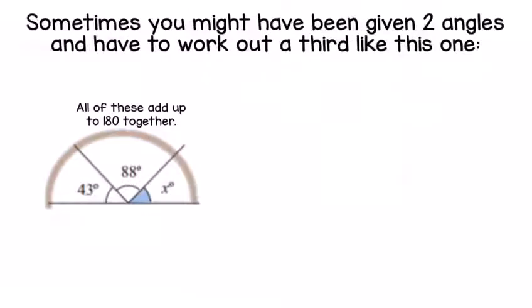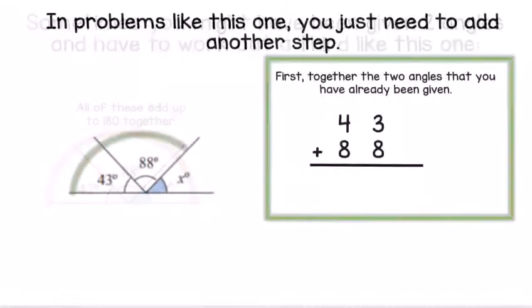Sometimes you may be given two angles already and have to find the third one. For problems like this, you add another step. You need to add together the two angles you've been given to find that total.